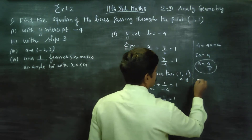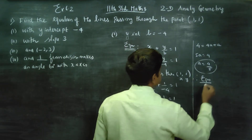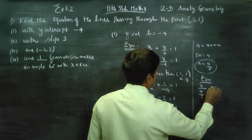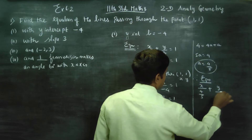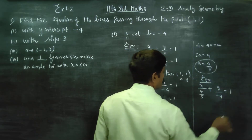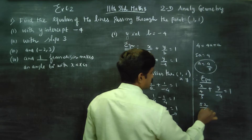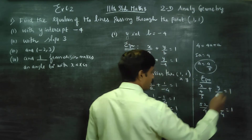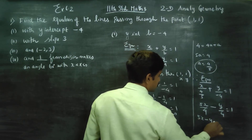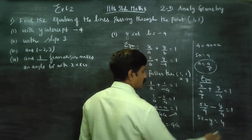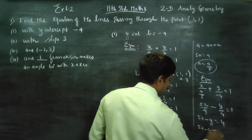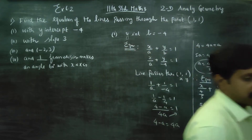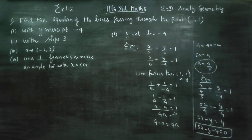Therefore, the equation is x/a + y/b = 1, which is x/(4/5) + y/(−4) = 1. Taking the reciprocal: 5x/4 − y/4 = 1. Multiplying through by 4: 5x − y = 4. So 5x − y − 4 = 0 is the equation of the straight line. First subdivision is over.